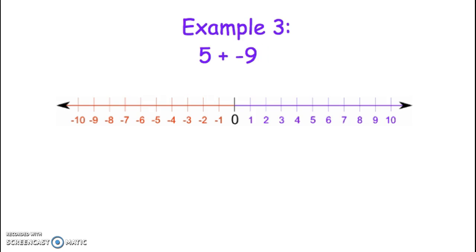Okay, you might want to try this one on your own. See if you can get it. Pause the video and then see how it worked. So this one's 5 plus negative 9. So again, I start at 0 and then I go to the 5 on the number line. It's positive 5, so I'm moving right. And then I need to add negative 9. Since it's a negative number, I've moved 9 spaces to the left.